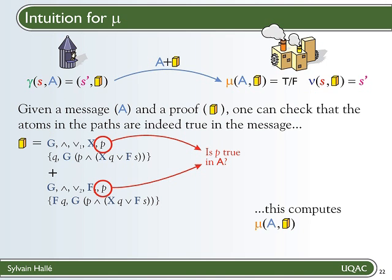This can be easily checked by making sure that all the basic expressions, so the atoms P and Q, that occur in the proof are actually true in the message as the proof stipulates. So we just evaluate the basic expressions occurring in the proof against the message and make sure that they fit.